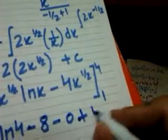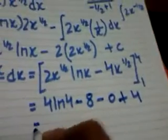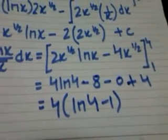So this gives 4 ln 4 minus 4. Take out the 4, and this is the required answer.